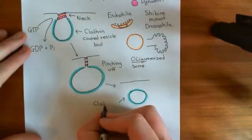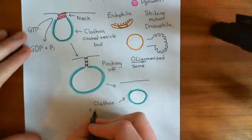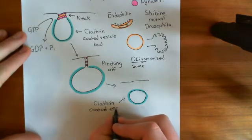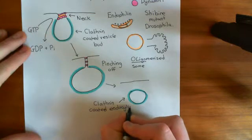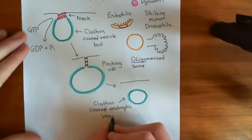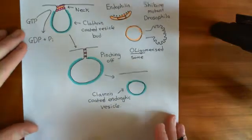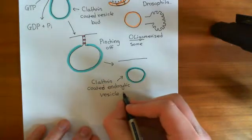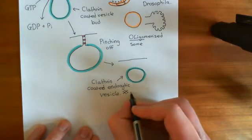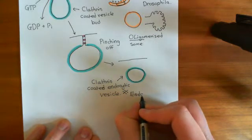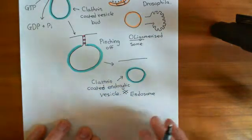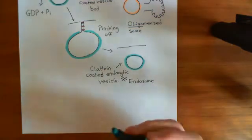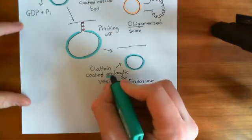The result of this process is that we now have a clathrin-coated endocytic vesicle. And I want to stress: this is an endocytic vesicle — it is not an endosome. People often use 'endosome' when they mean 'endocytic vesicle,' but this is absolutely not an endosome. We will see what an endosome is when we look at the endocytic pathway. An endosome is something far, far bigger; the endocytic vesicle is going to the endosome.